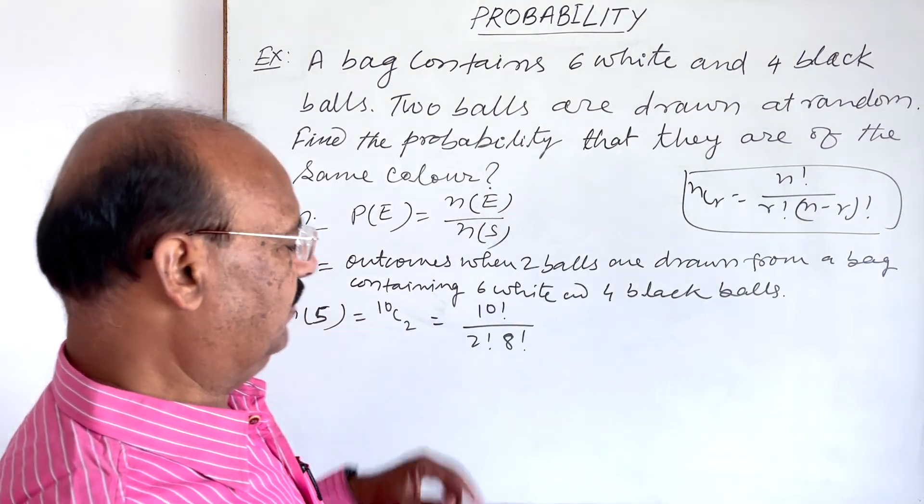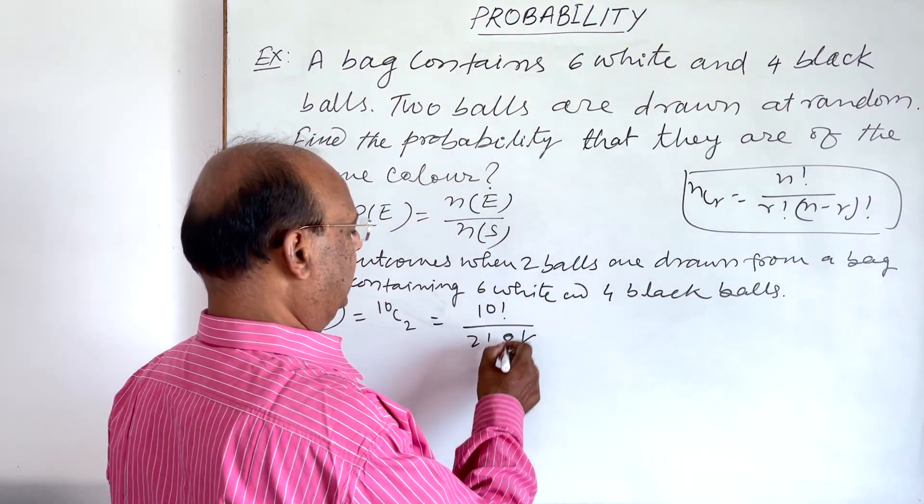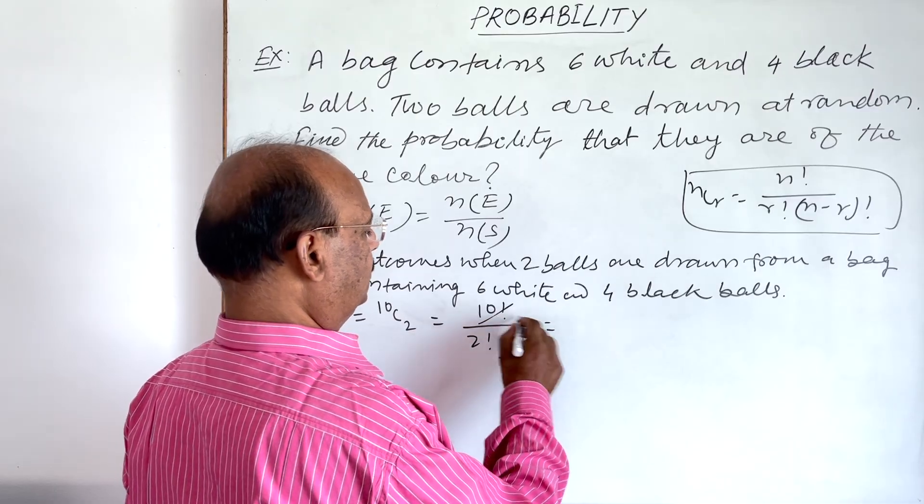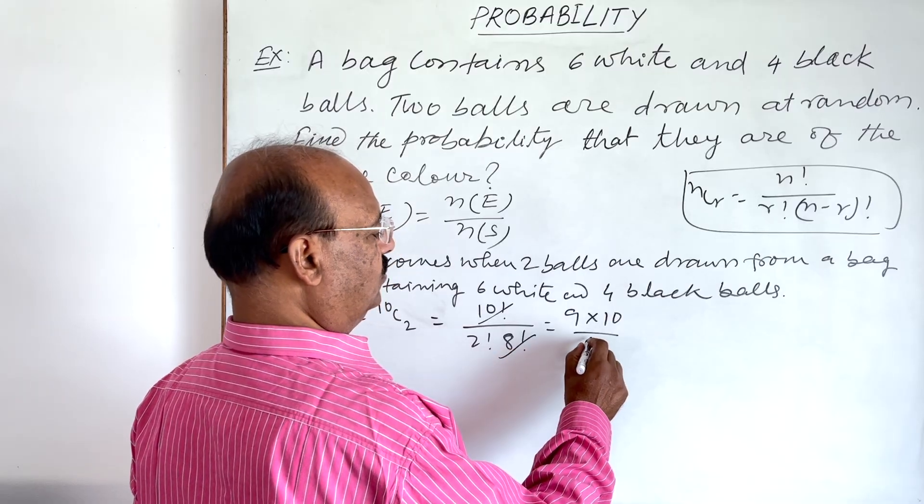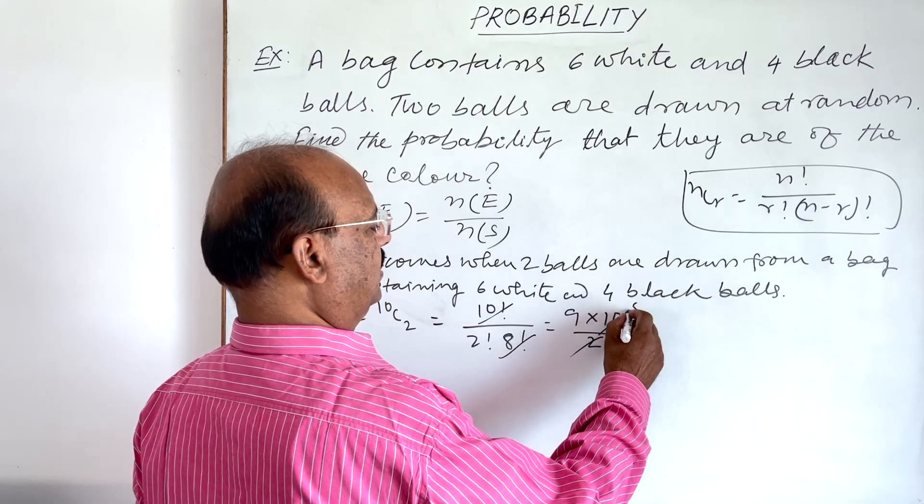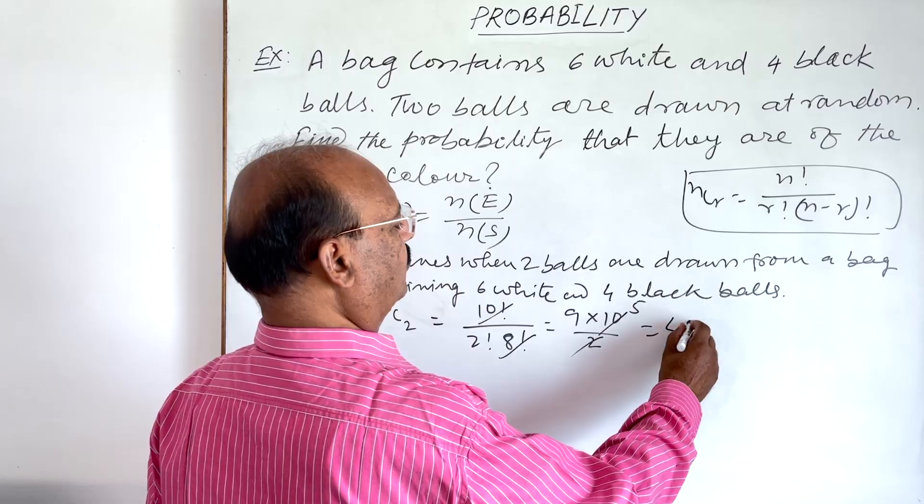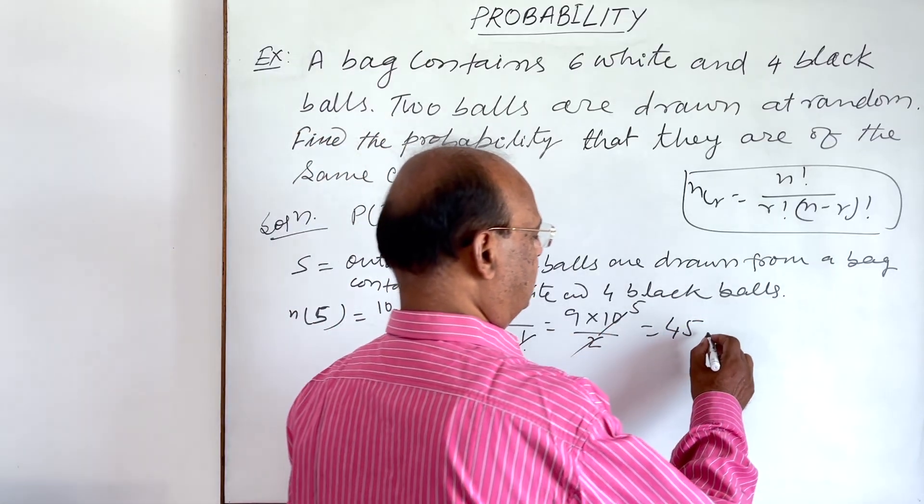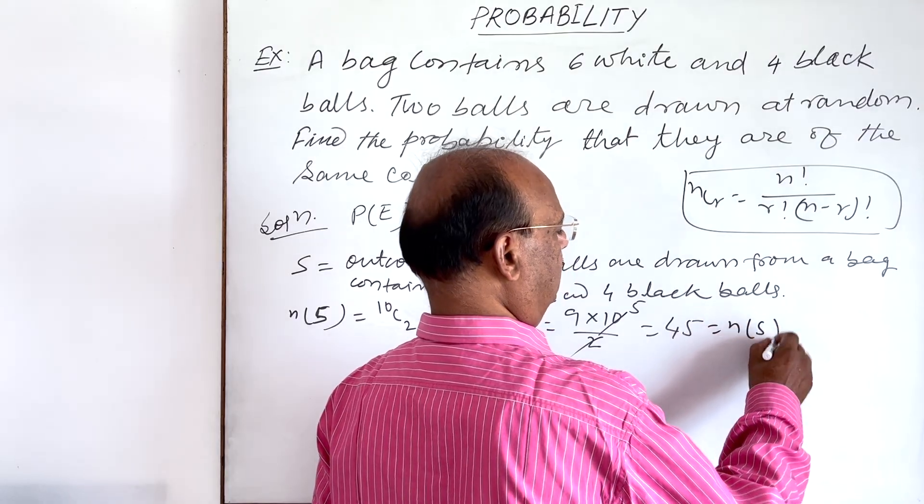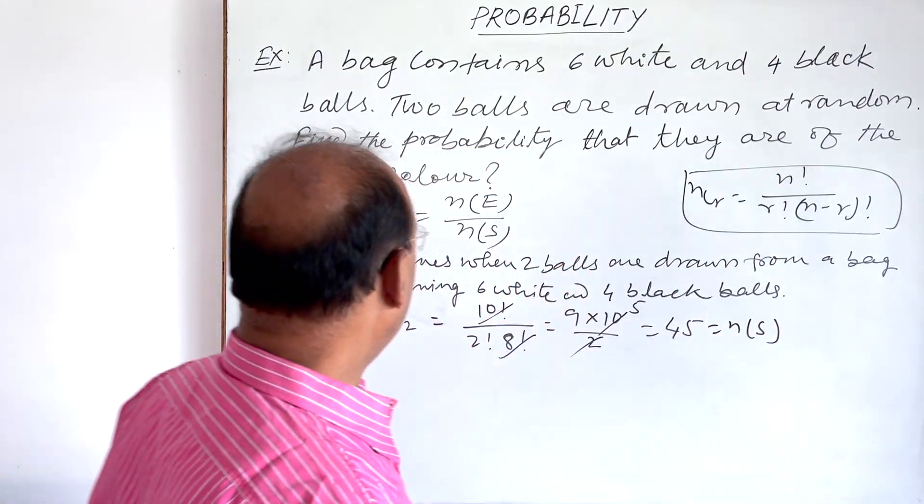Let us simplify it. Eight factorial cancels out with ten factorial, so numerator will be nine into ten, and two factorial means one into two, that is two. Two fives are ten. This is equal to 45. So this is the value of n(S).